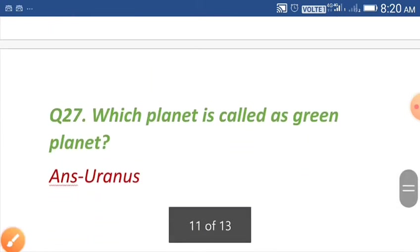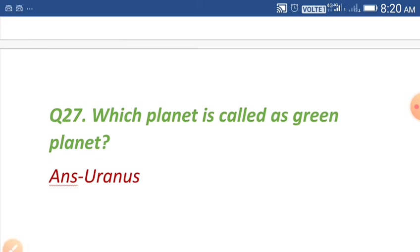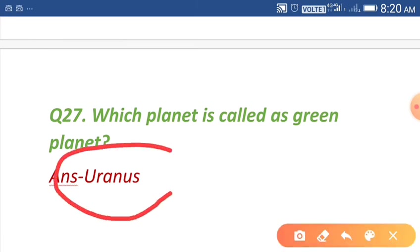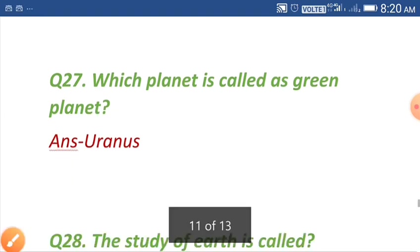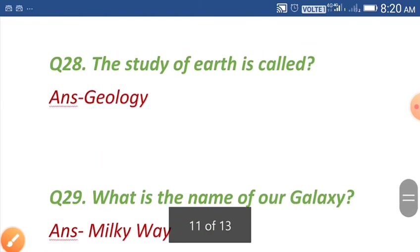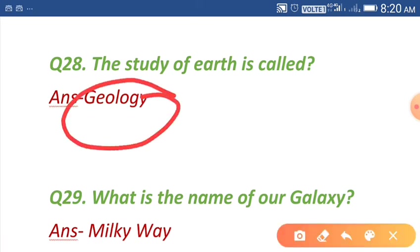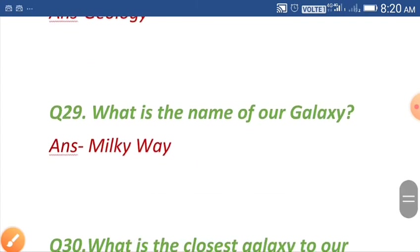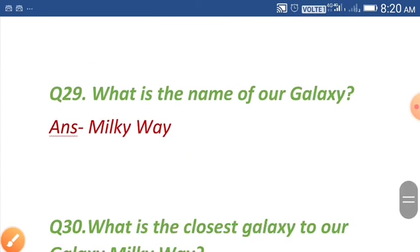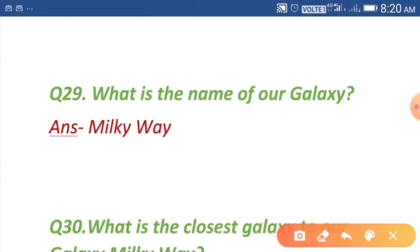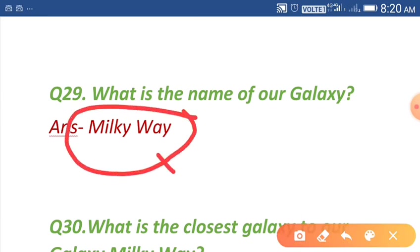Question number twenty-seven: which planet is called the green planet? Uranus is called the green planet. Question number twenty-eight: the study of Earth is called geology. Question number twenty-nine: what is the name of our galaxy? The name of our galaxy is the Milky Way.